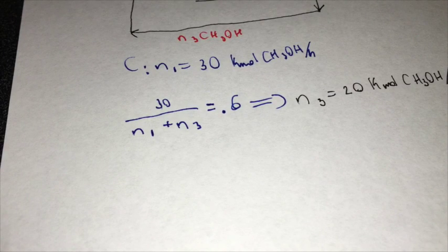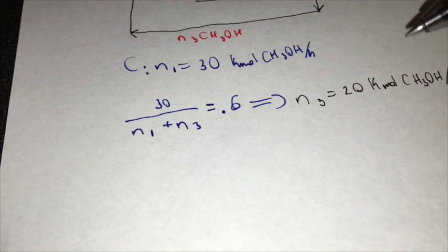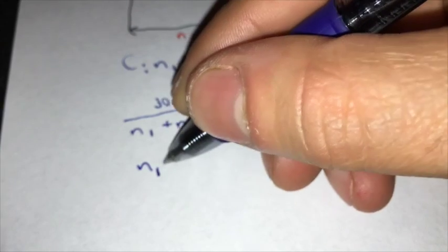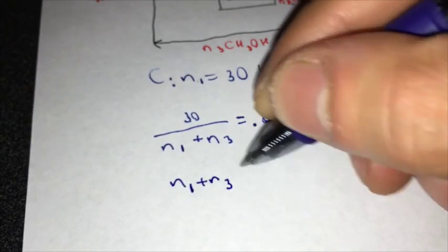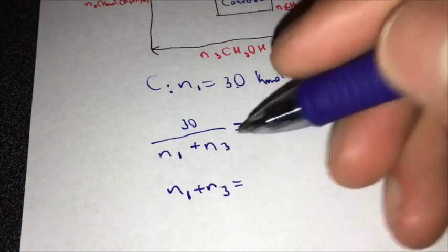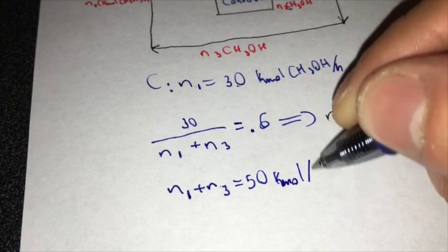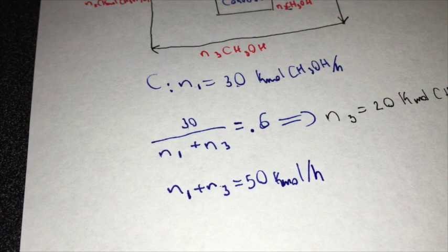And now that we've got the N1 and the N3, we can easily calculate the input rate of methanol to the reactor, which is going to be N1 plus N3 equal to 30 plus 20, 50 kmol per hour. Alright.